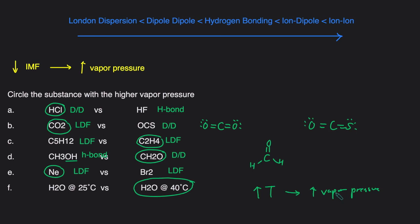I know I kind of breezed through the part where we talked about how to determine what IMF a compound has, so if you're having trouble following along, check out my video in the description below where I go over how to determine intermolecular forces in detail. If you want to learn how to ace chemistry, learn the best ways to study for this class, and get some neat tricks and tips to do better on your exams, head over to my website and get the free guide '12 Secrets to Ace Chemistry' at www.conquerchemistry.com/chemsecrets.